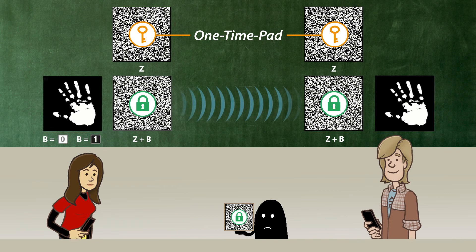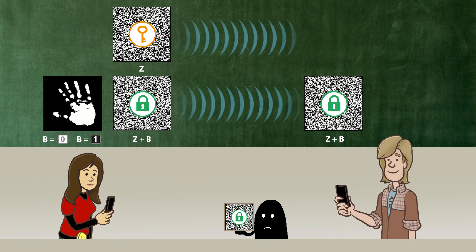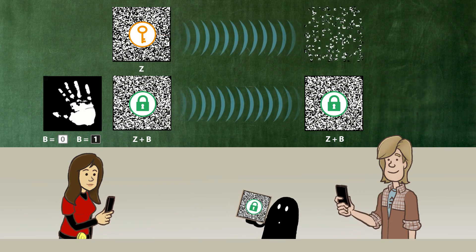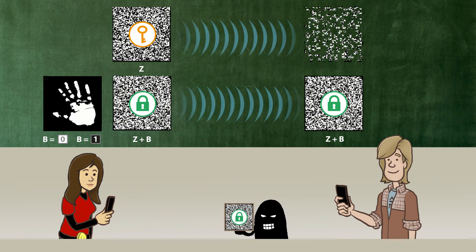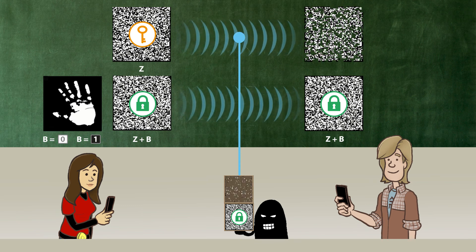Thus Alice needs to transmit the random pattern to Bob. It could be said that this would be the starting problem again. So the spy actually needs to eavesdrop on the random pattern in order to be able to decrypt the message.